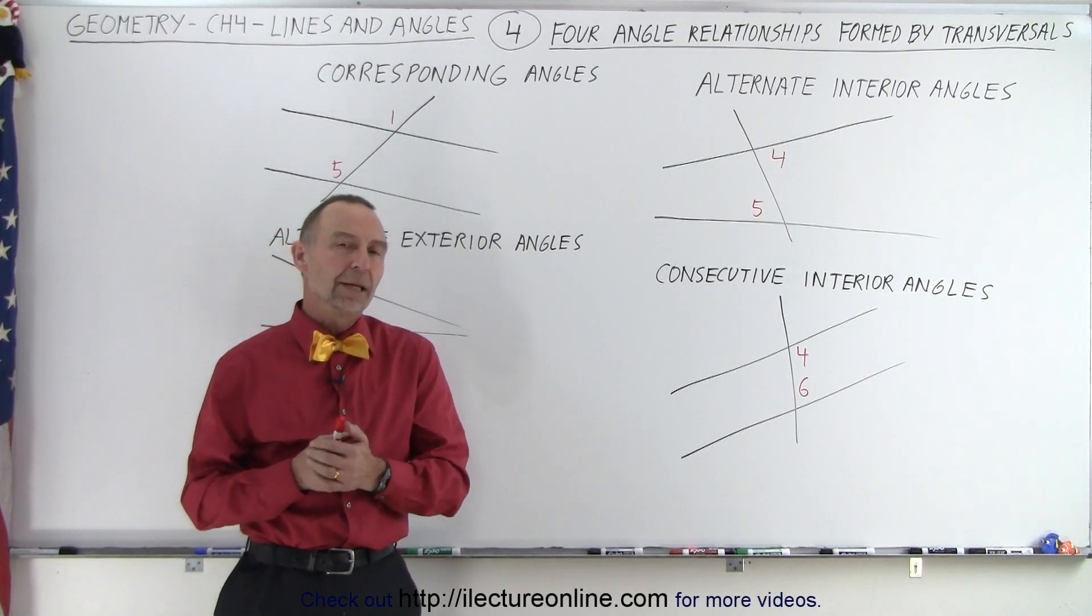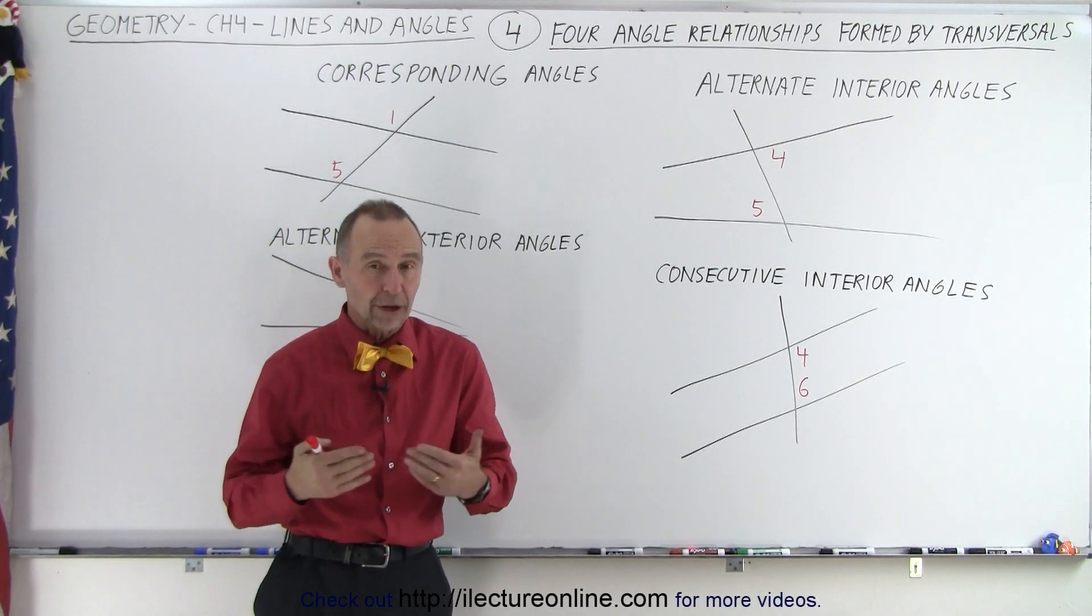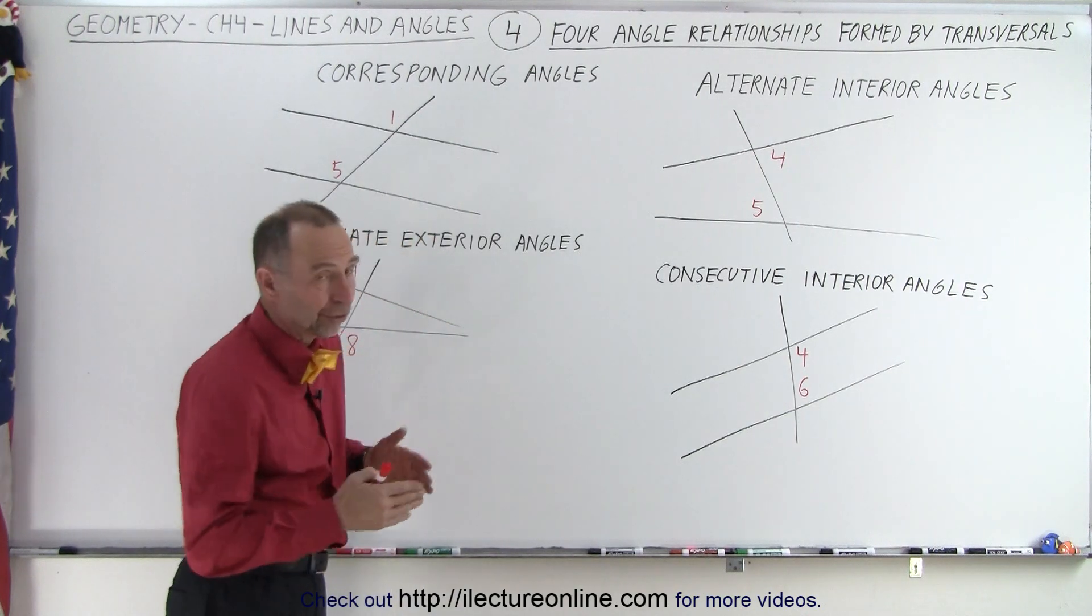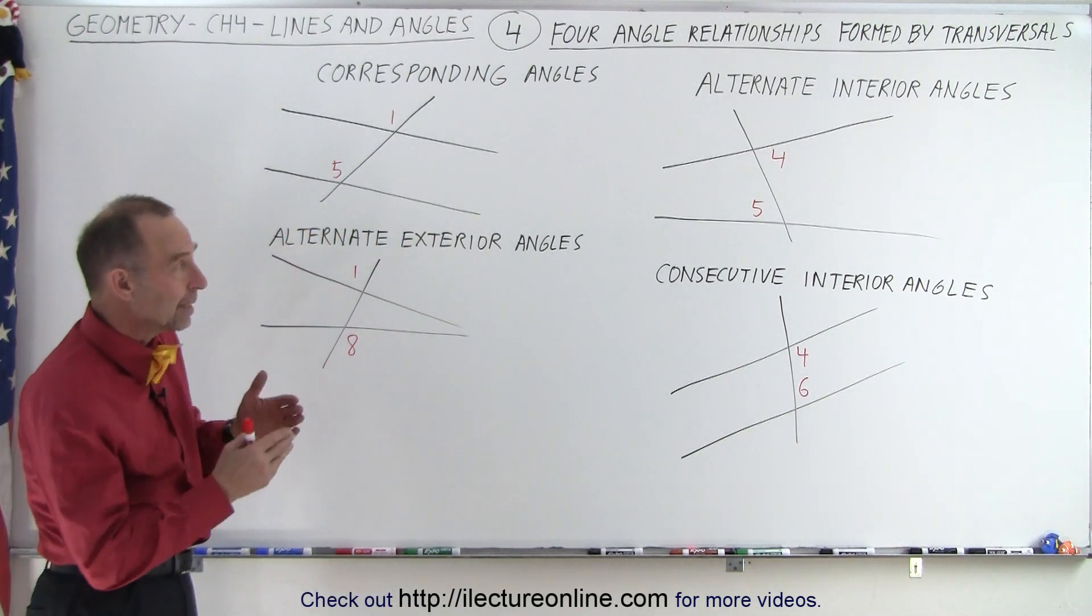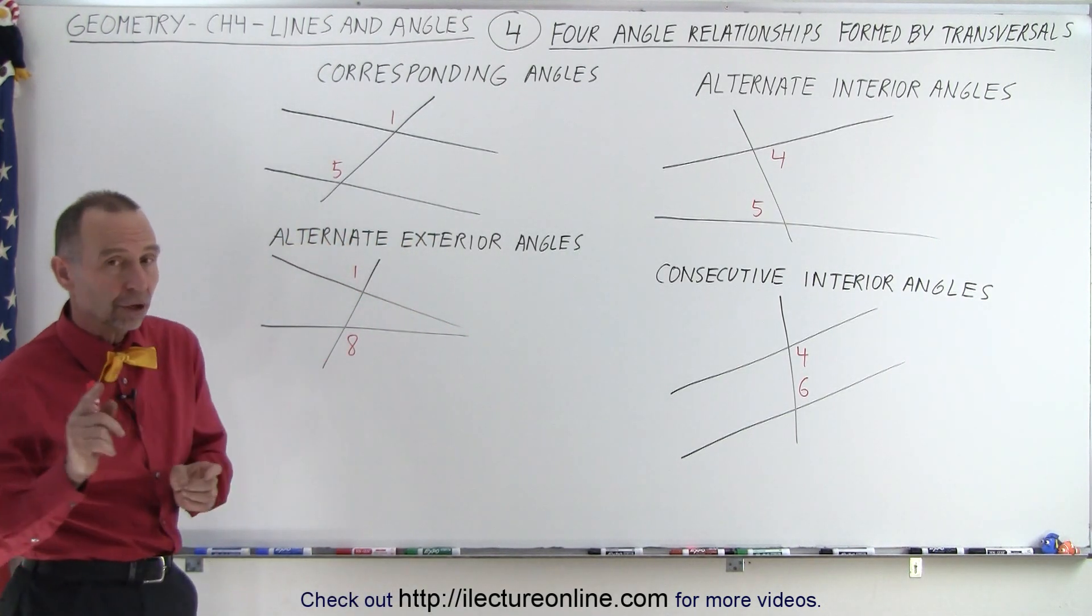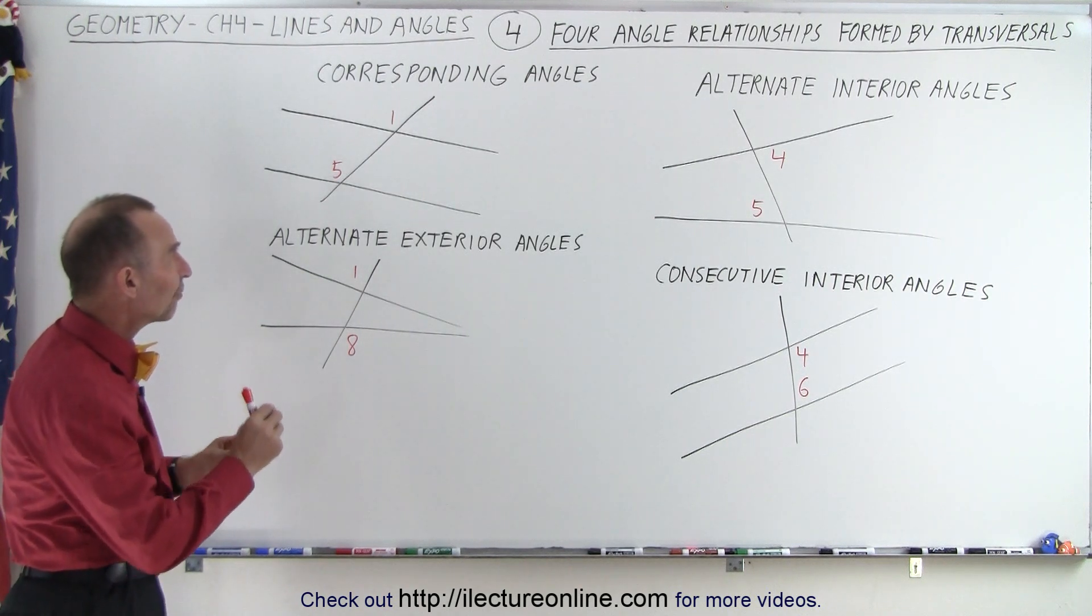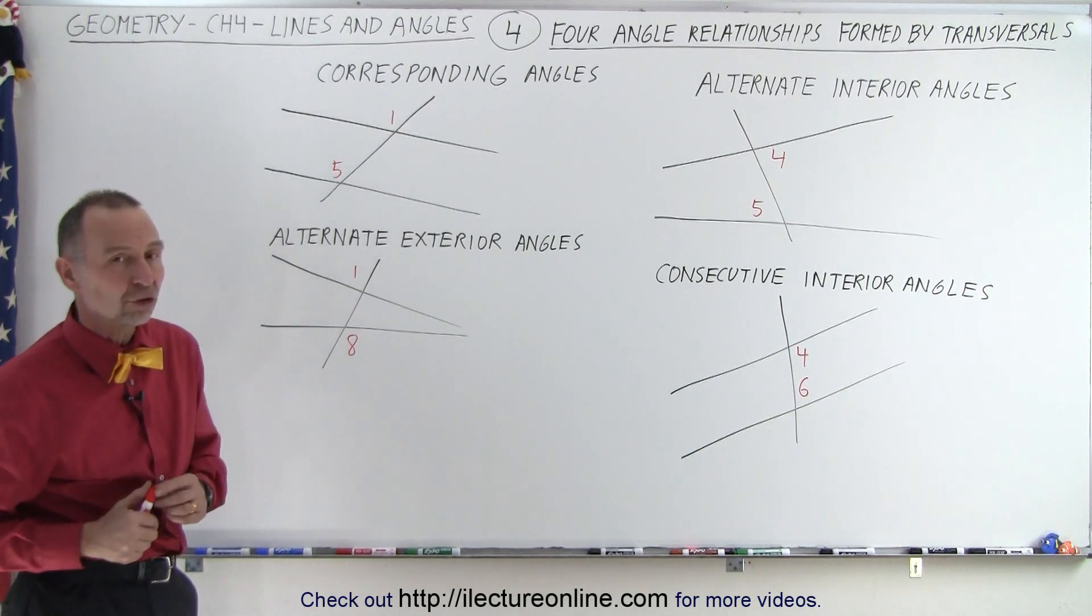Welcome to our lecture online. Now, if we have a transversal crossing two lines, those lines don't have to be parallel, they can be non-parallel, as long as they are coplanar, then we have four different angle relationships.